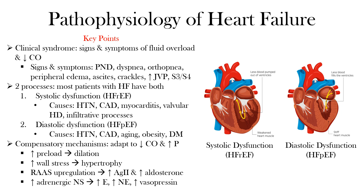Systolic heart failure results in less blood being pumped out of the left ventricle due to a weakened heart muscle. In systolic dysfunction or HFrEF, you have a weakened, dilated heart muscle, and as a result, less blood is being pumped out of the left ventricle to the rest of the body — that's why we have this reduced ejection fraction.